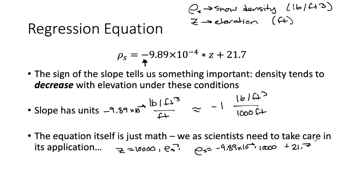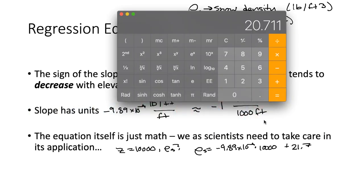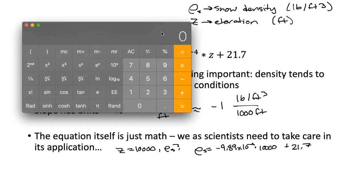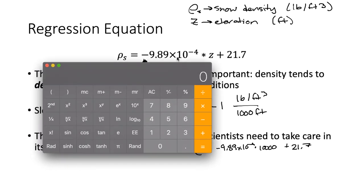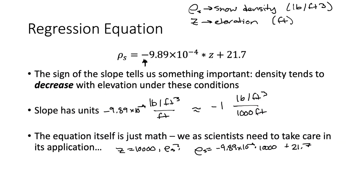So it's just a plug and chug. Rho sub s equals minus 9.89 times 10 to the minus fourth times 10,000 plus 21.7. And the math actually works out pretty easy for us. If we just take minus 9.89 times 10 to the fourth times 10,000, 10,000 is just 10 to the fourth, so we get just a minus 9.89 plus 21.7. So that's just 21.7 minus 9.89. That equals 11.8.